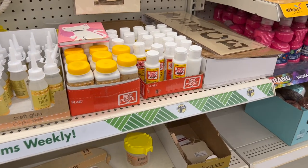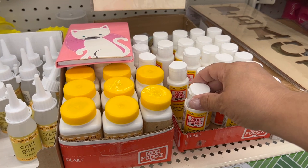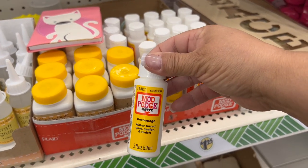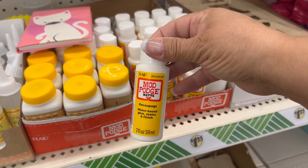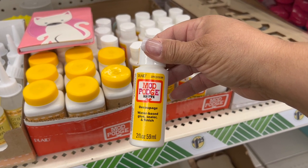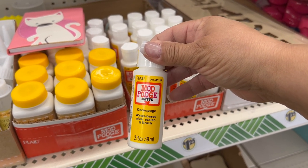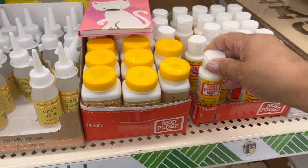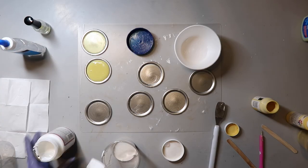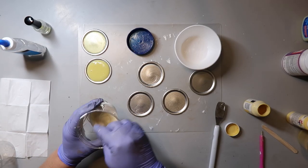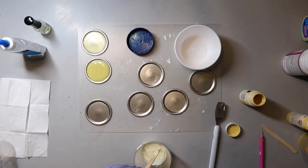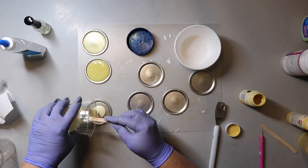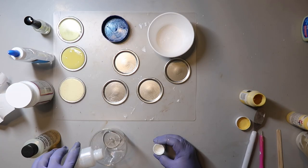We're going to try Mod Podge for this one. They carry it at Dollar Tree, but I had some on hand. I'm not sure if the type of Mod Podge is going to matter or not, but I'm using the dishwasher safe one, and I mixed some paint, like the same paint I've been using, and I put that into a cup, and I poured in some of the Mod Podge, mixed it all together, and poured it into my mold. And the last attempt is with resin.